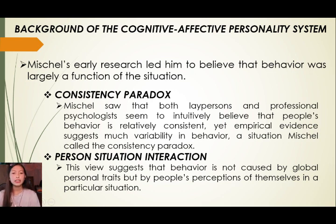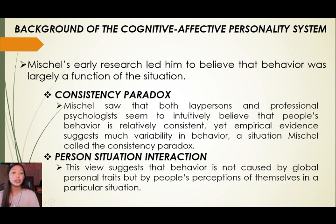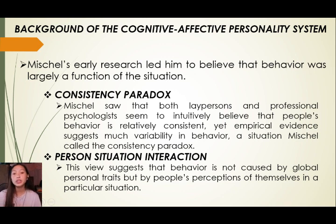In trait psychology, if you are an extroverted person, then you are extroverted in all situations. However, according to Mischel, there might be situations where you are sociable, but also situations where you are quiet. This means behavior changes over time — if the situation changes, the behavior might change as well. Situation A is different from situation B, which is why it is a paradox. You are consistently different across various situations.